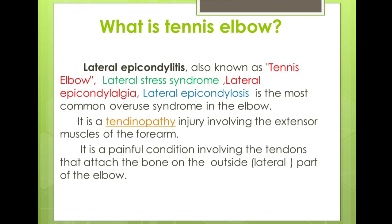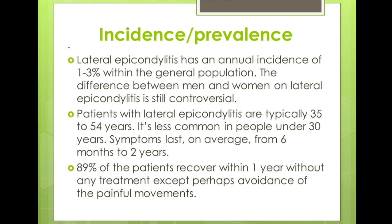It is an injury involving the extensor muscles of the forearm. It is also a painful condition involving the tendons attached to the bone on the outside part of the elbow. In terms of incidence and prevalence, annually one to three percent of the general population is affected. The age group most affected is between 35 to 54 years, and it is less common under age 30. Symptoms arise from six months to two years, and 89% of patients recover within one year without any treatment, as long as they do not restrict movement in the hand.